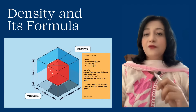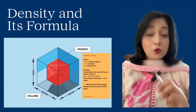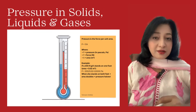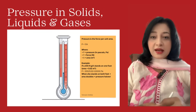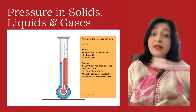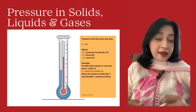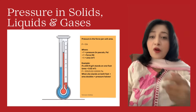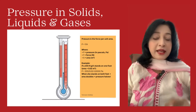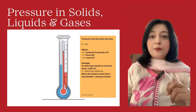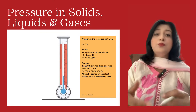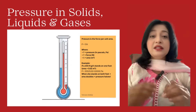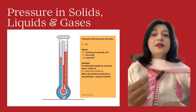Objects float if their average density is less than water, which is 1000 kg/m³ — like ships. Pressure is the force per unit area: P = F/A, where P is pressure in pascals, F is force in newtons, and A is area in meters squared. For example, a 200-newton person standing on a foot area of 0.02 m² gives P = 1000 pascals. When standing on both feet, area doubles and pressure halves. Smaller area means greater pressure — that's why knives are sharp and camels have wide feet.